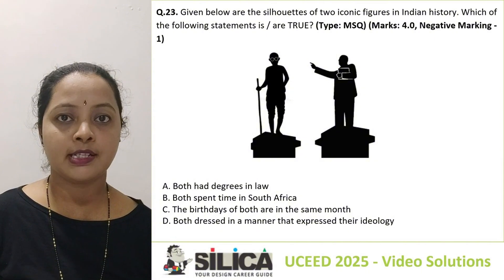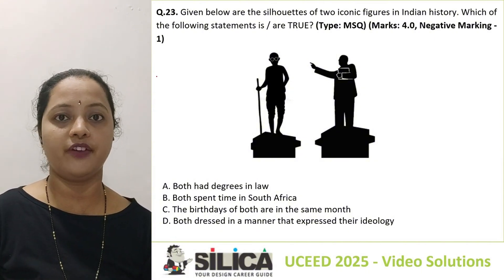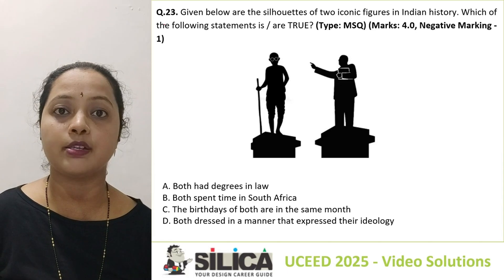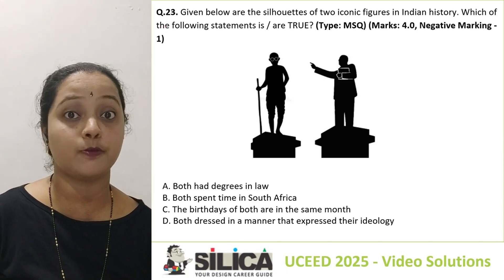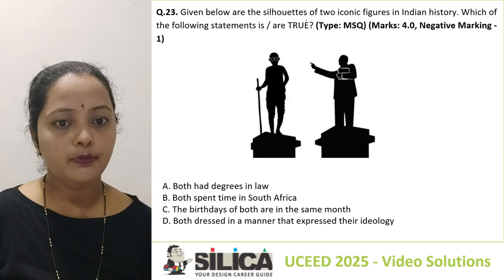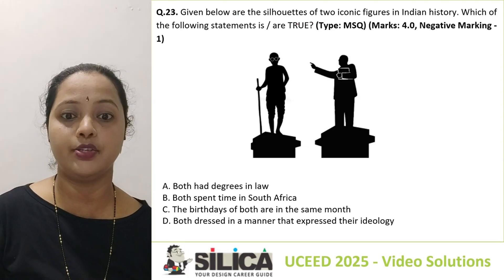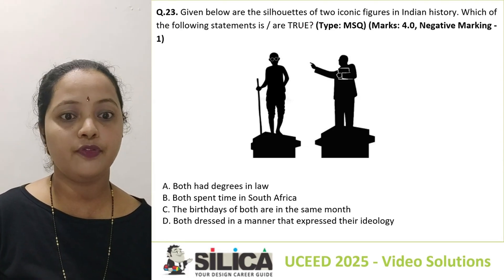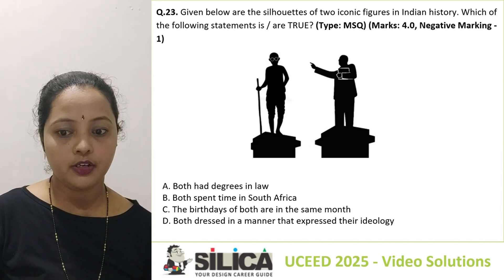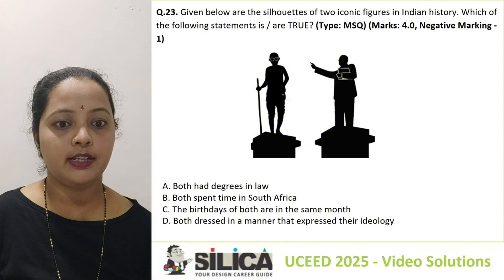We are discussing solutions to UC 2025 paper. This is question number 23, an MSQ question with multiple answers possible. Given below are silhouettes of two iconic figures in Indian history — which of the following statements are true? When you observe the figures, you can figure it out very easily.